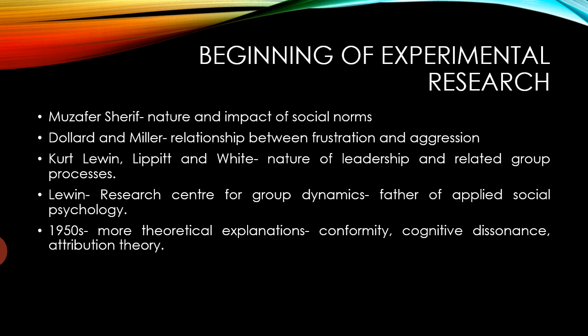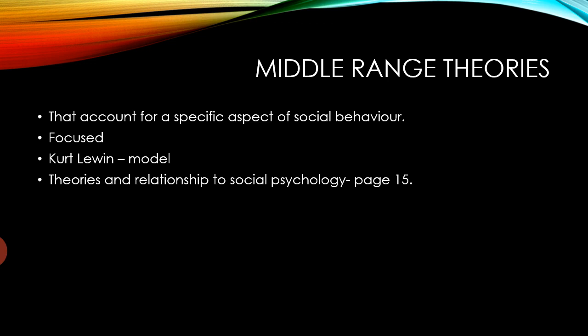Kurt Lewin also researched on group dynamics. Then by the 1950s, more theoretical explanations regarding conformity, cognitive dissonance and attribution theory came. All these terms will be explained later. Then came the middle range theories that account for a specific aspect of social behaviours, and researchers became more focused in this area. Kurt Lewin made a model, and the theories and relationships for social psychology are given in page number 15 of your study material.